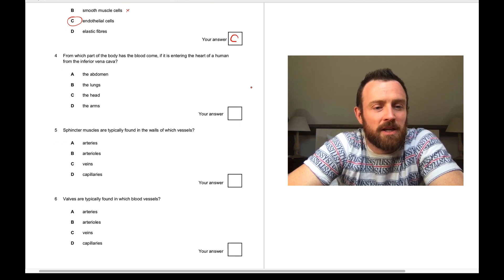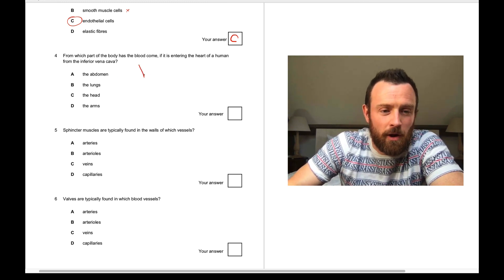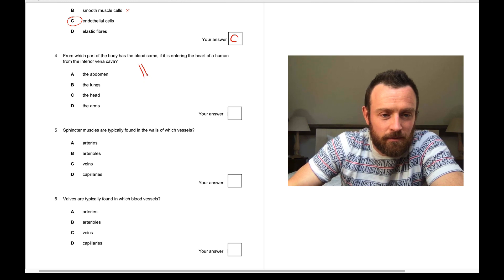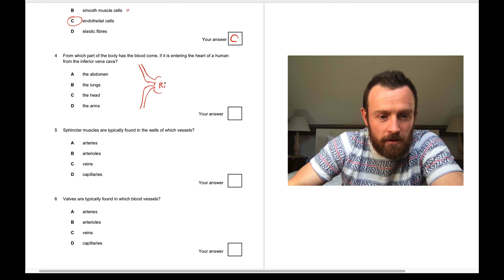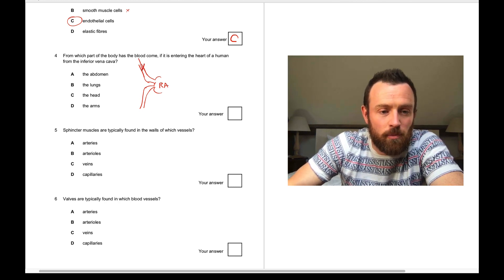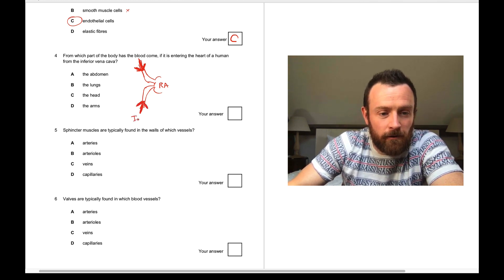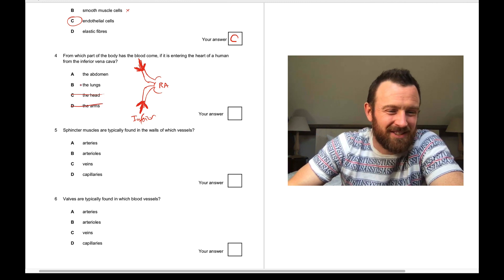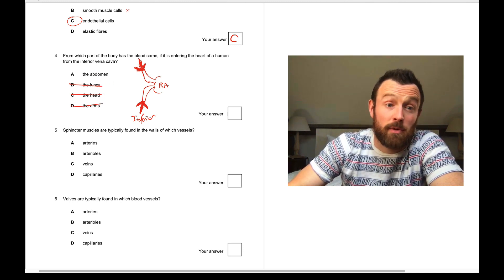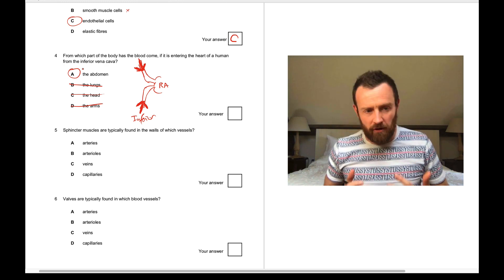Question four. Which part of the body has the blood come from if it's entering the heart of a human from the inferior vena cava? So remember, on the heart diagram, you've got two vessels. They enter the atrium very close to each other. This one, the superior comes from the head region. And the inferior, that's this one down here, comes from the body region. So the body region, it's not the head, it's not the arms, it's not the lungs because that would be pulmonary vein. It's the abdomen. Abdomen is your core, your trunk, your stomach area.